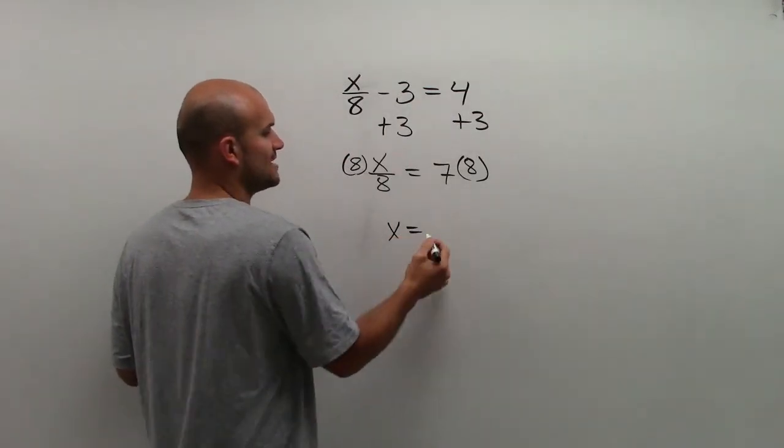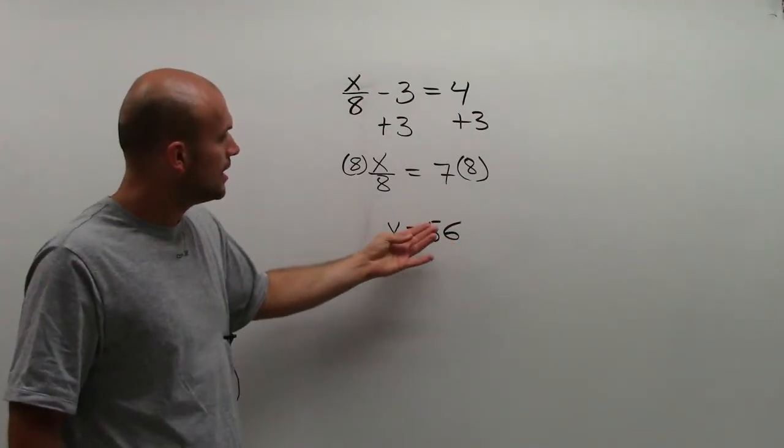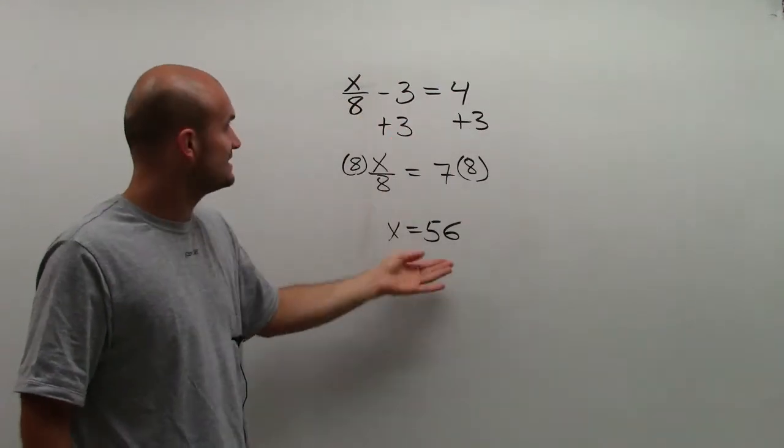And then 7 times 8 is 56. So the value of my variable that makes this equation true is 56.